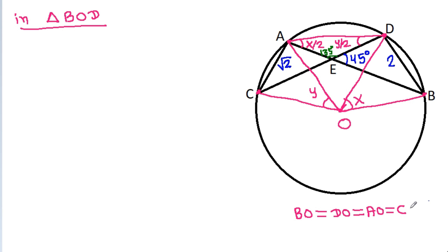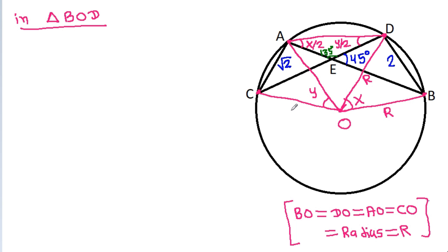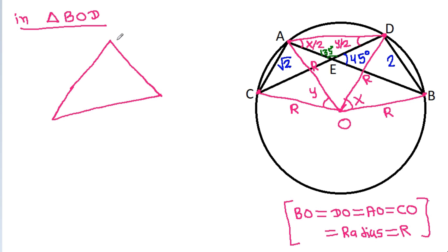AO equals CO equals radius R. So BO is R, DO is R, CO is R, and AO is R. Now in triangle BOD, this angle is X, BO is R, DO is R, and BD is 2.